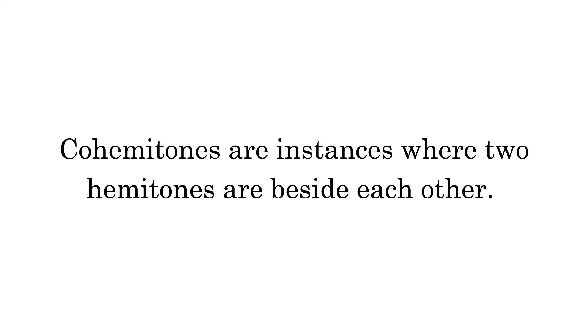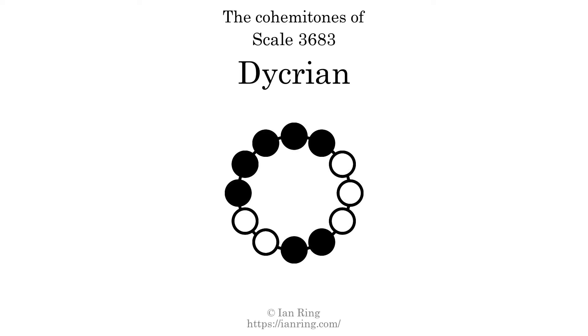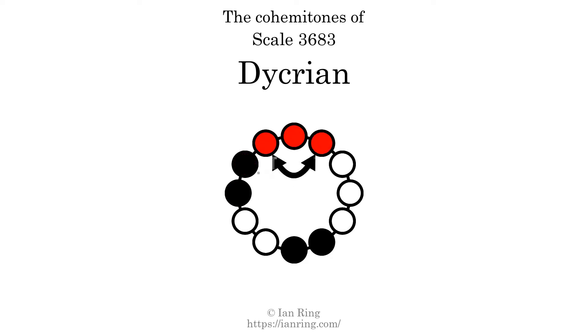Co-hammertones are instances where 2 hammertones are beside each other. This scale has 3 co-hammertones. They are at positions here, here, and here.